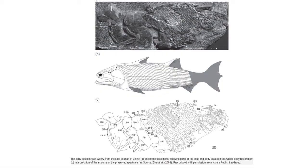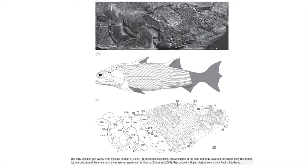One of the earliest Actinopterygian fish is the late Silurian and early Devonian Guiyu from China. It features many of the advanced features of Osteichthian fish, including a gill arch covered by movable opercular bones. The lower jaw — the dentary — as well as the maxilla contain rows of teeth, and the scales are overlapping. Yet like primitive Actinopterygian fish, it has fin spines. Guiyu is placed between Actinopterygian and Sarcopterygian fish within Osteichthians.